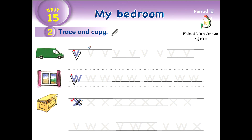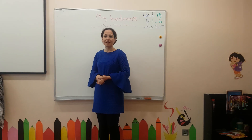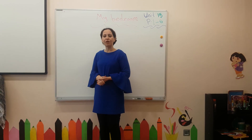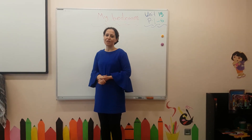The letter is X. The sound is X. Like this — one, two — like this. You can find letter X in the word 'box.' Trace letter X, then copy. Thank you, my dear. Thank you for watching this video. I hope you understood everything. See you soon.